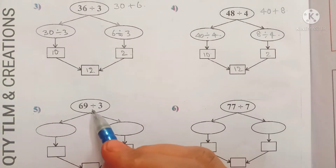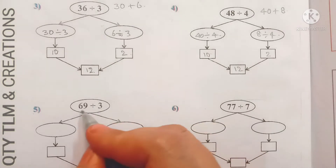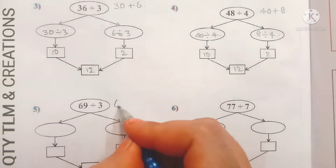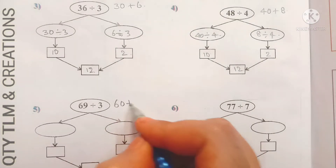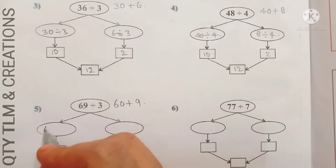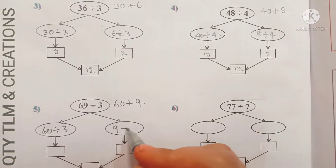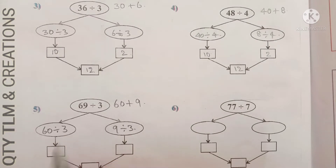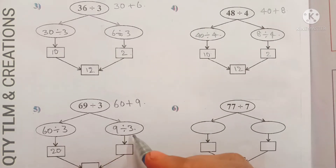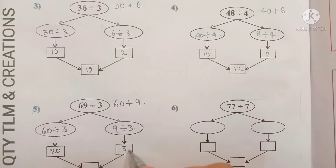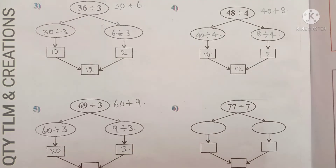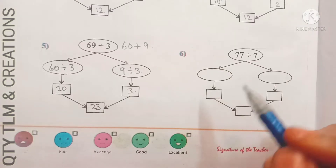Next: 69 divided by 3. The expanded form of 69 equals 60 plus 9. So 60 divided by 3 and 9 divided by 3. 3 divides 60 for 20 times, and 3 divides 9 for 3 times. We add 20 and 3 and we get 23.